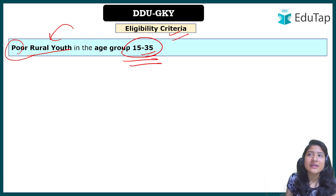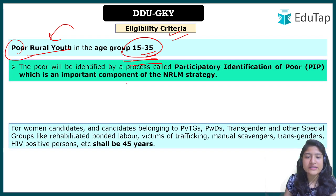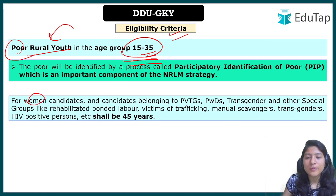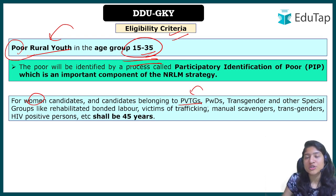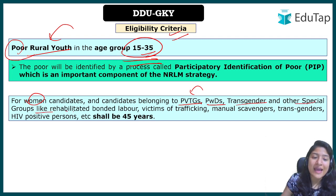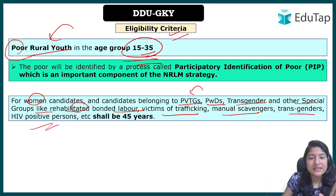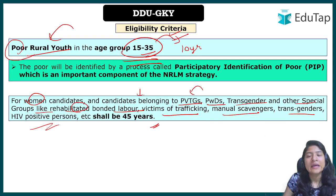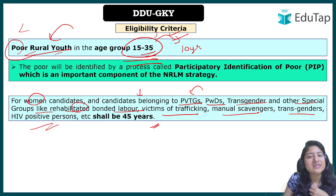For special categories — women, PVTGs (Particularly Vulnerable Tribal Groups), the physically disabled, transgender persons, rehabilitated bonded labor, trafficking victims, manual scavengers, and HIV positive persons — the age limit is extended by 10 years to 45 years. For general poor rural male youth, the upper limit remains 35 years.